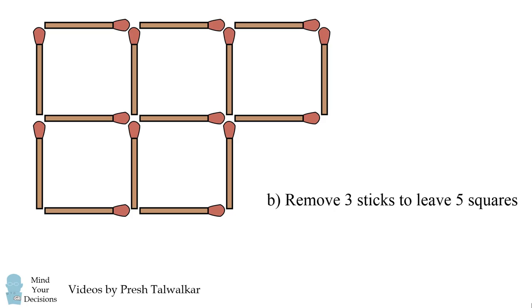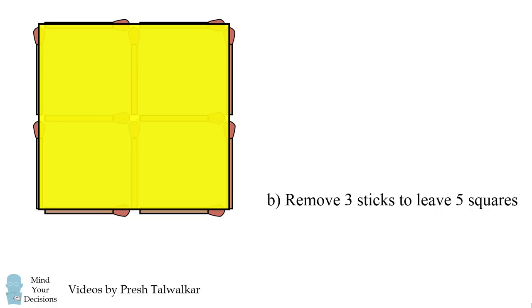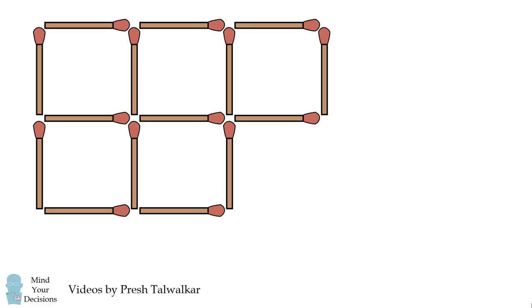Now, how can we remove three sticks to leave five squares? We can remove these three sticks. We have four little squares and then we have one large square which makes the fifth square.